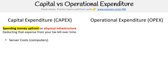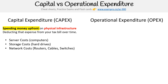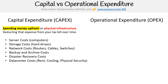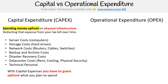Capital expenses are anything physical that you're buying with money upfront: computers, so that would be your server costs; hard drives for your storage costs; routers, cables, and switches for your network; purchasing things for backup and archive costs; disaster recovery, like an uninterruptible power supply; your data center costs — so that's your rent, cooling, and physical security; and your technical personnel, hiring people to do things for you. With capital expenses, you have to guess upfront what you plan to spend.